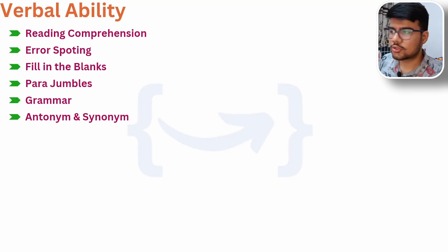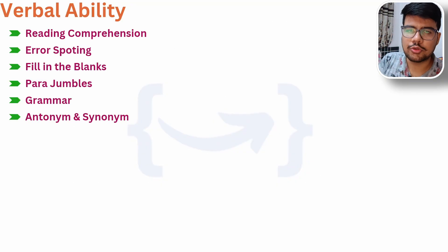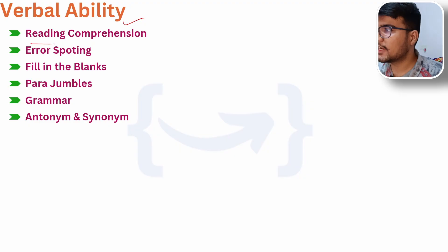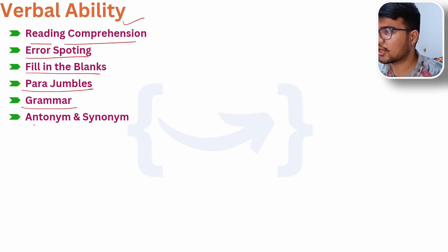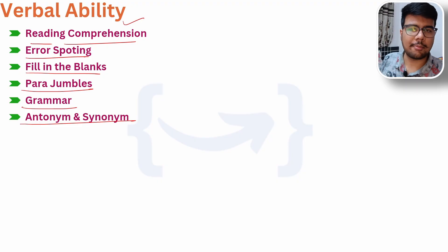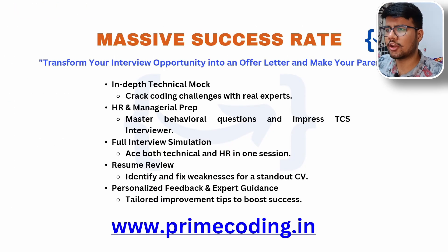These are the questions that you need to practice for numerical ability. Another topic is Verbal Ability — reading comprehension, error spotting, fill in the blanks, para jumbles, grammar, antonym and synonym are the most repeated topics that were asked in TCS NQT 2025 off-campus hiring, which majorly happened in March. We have a lot of verbal ability questions here.